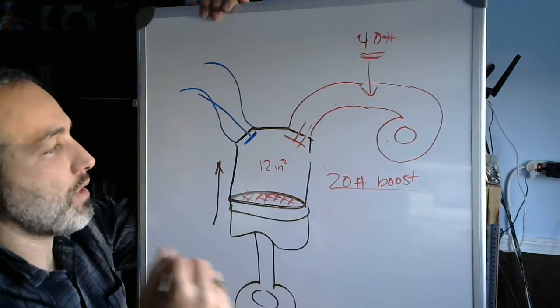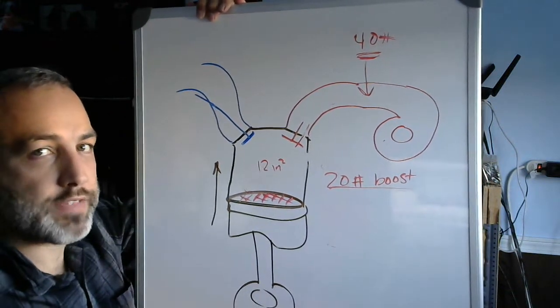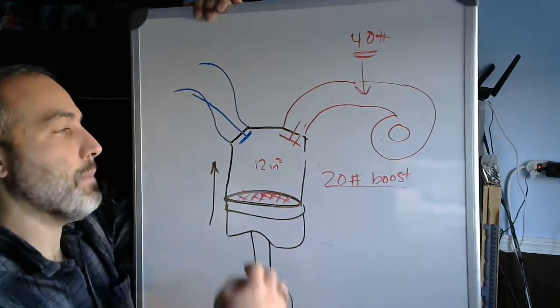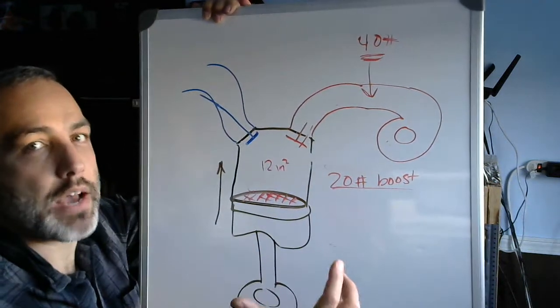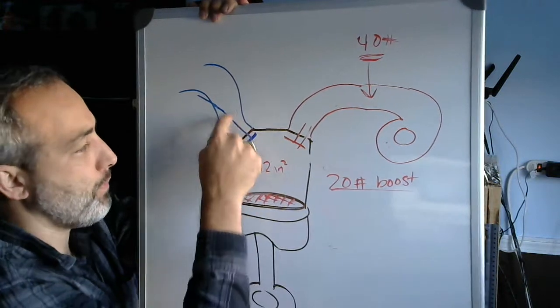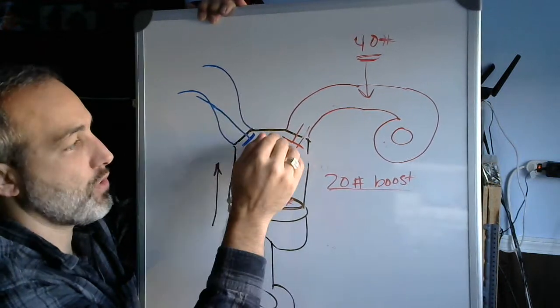So with variable cam timing, what you do is on the top end, you minimize valve overlap on a turbocharged car because this pressure is usually really high on the top end. You minimize overlap so that there's only a little squirt of exhaust gas into the port before this valve shuts.